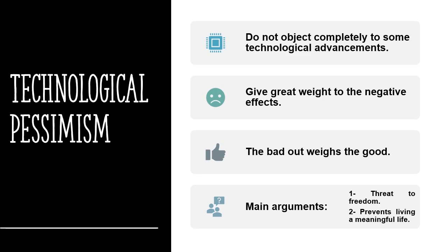Technology must bring no harm. If any technology brings harm, it is frowned upon and disregarded. This approach is known as technological pessimism. Technological pessimism accepts technological advances but always outvalues any harm done over any benefit.